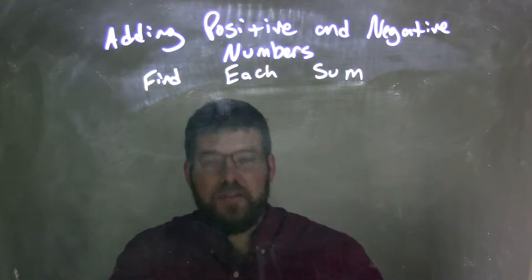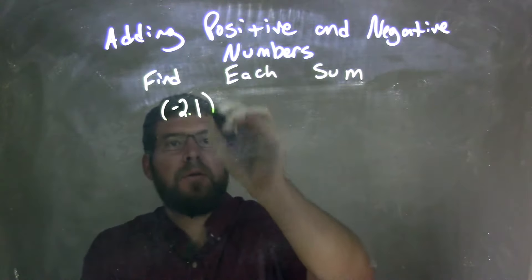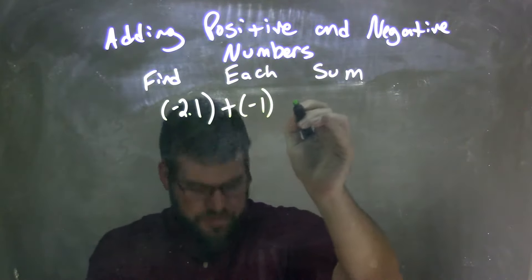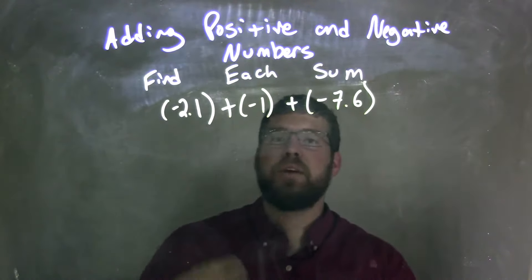So if I was given this expression, negative 2.1 plus negative 1 plus negative 7.6, and I want to add them all together.